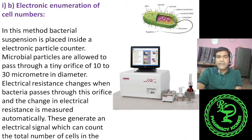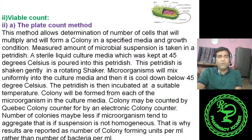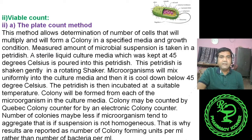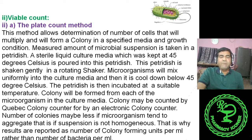These are the two techniques for total count. Next we will go for viable count. In this method, only living cells are counted. The basic principle is that if a microbial cell is provided with suitable culture media, it will multiply and grow, and after repeated multiplication a colony will be formed.